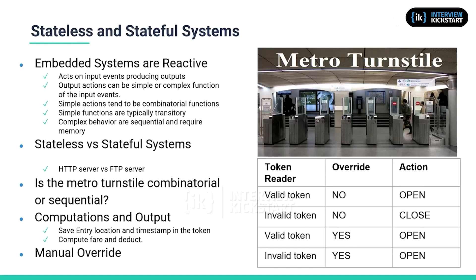What exactly is the nature of the relationship between the input and the output determines how the embedded system software or hardware are structured. Consider the metro turnstile control system — its basic functionality is to keep the turnstile locked unless a valid token is recognized by it, or an override button is enabled.